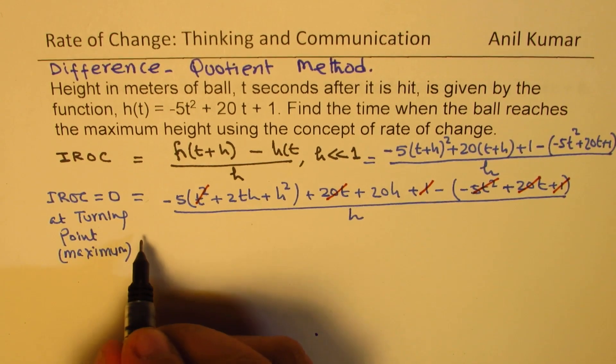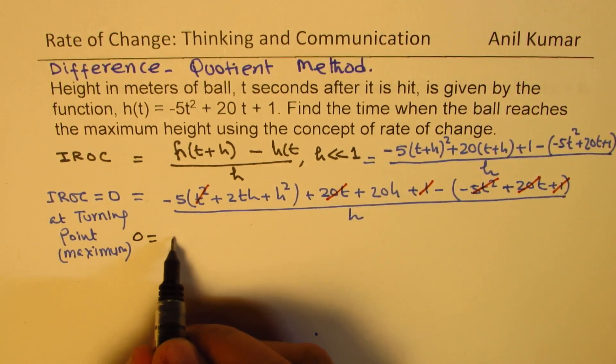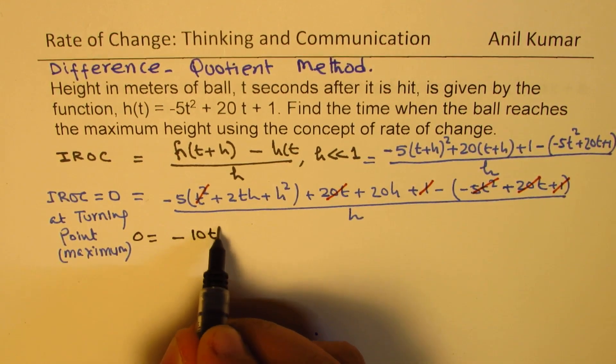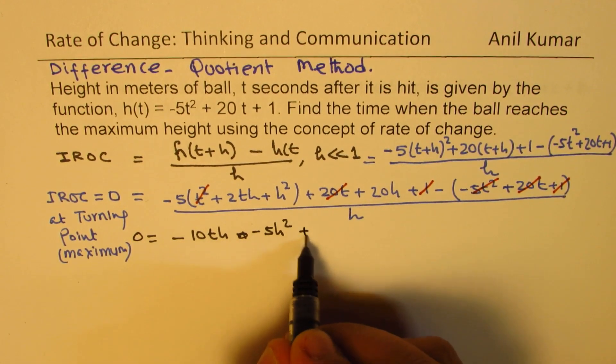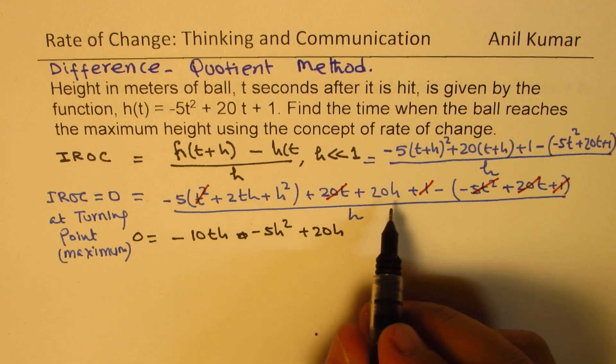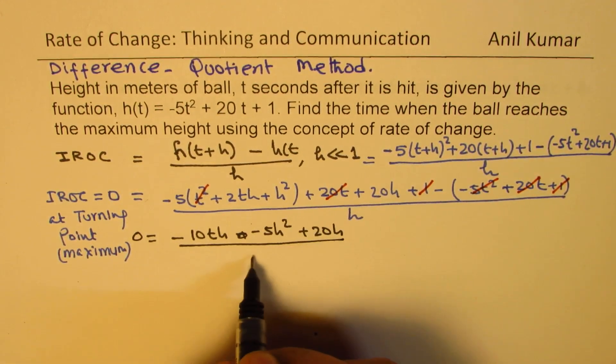Now, we can now write this as 0 equals to, open the bracket. So we have minus 10th, rather minus 5h², we have plus 20h, right? And all these cancel, divided by h.